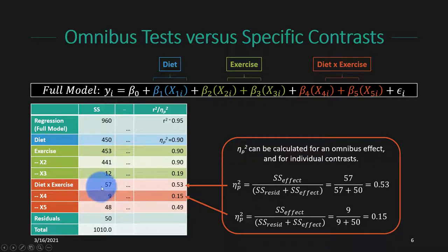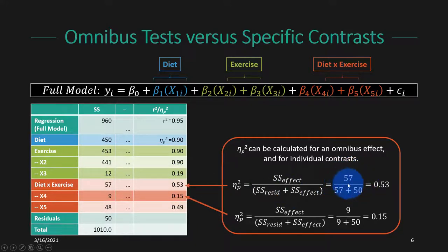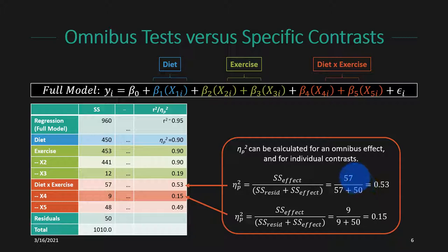For the diet-by-exercise interaction, we need two contrast-coded predictors for the omnibus test, and a total of 57 squared errors are explained by that interaction. We calculate partial eta-squared for the omnibus test by taking the variance explained by both predictors as a set and dividing by the combined residual and effect variance — how much variance remains after accounting for all other factors. In this case, 57 out of 107 is about 53%, meaning 53% of the variance left over after accounting for diet and exercise got explained by the interaction.